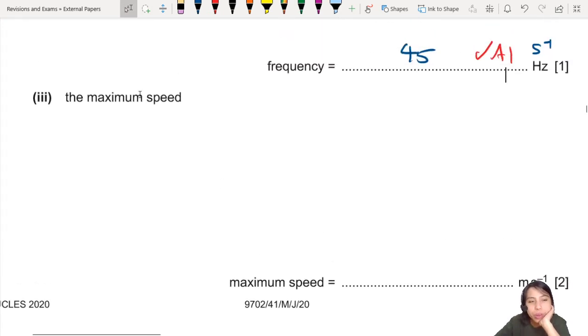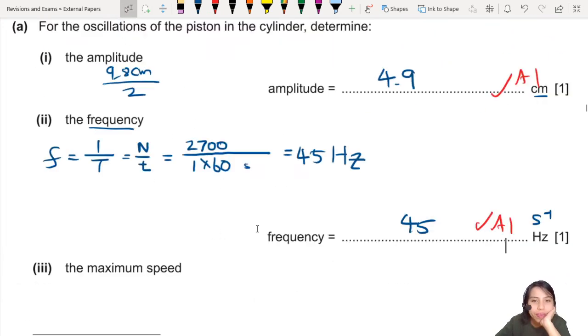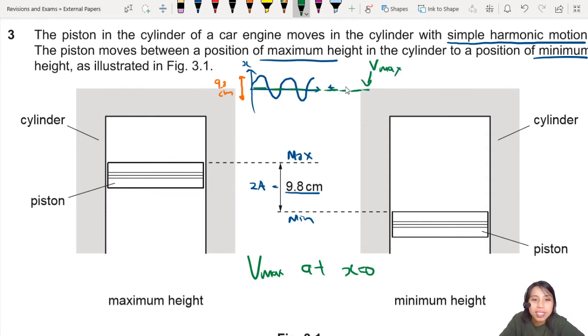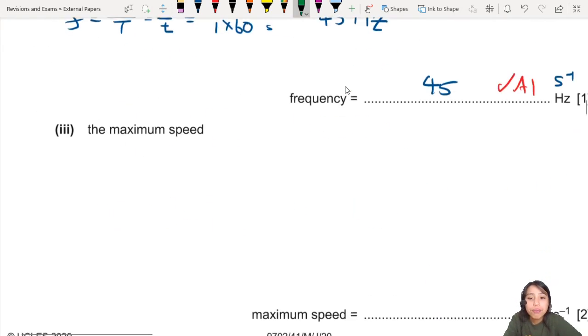Now we come to A2, the maximum speed of the piston. So if you remember the simple harmonic motion SHM graphs, maximum speed occurs where? V_max is at x equals to zero, so zero displacement, aka the equilibrium position. This green dotted line is where the maximum velocity will occur. At the maximum here, it stops moving. The bottom minimum is stop moving because it's going to U-turn.